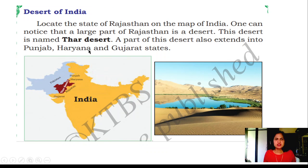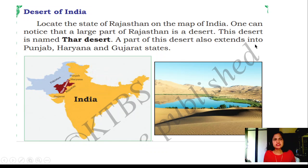Desert of India. Locate the state of Rajasthan on the map of India. One can notice the lowest part of Rajasthan is a desert here. This desert is named Thar Desert. The part of this desert also extends into the Punjab, Haryana, and Gujarat states.